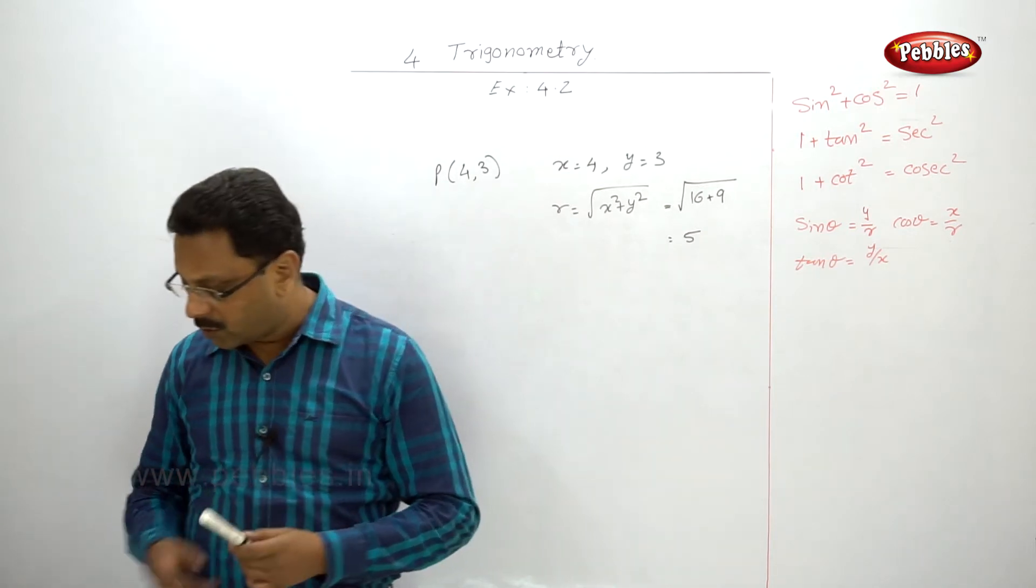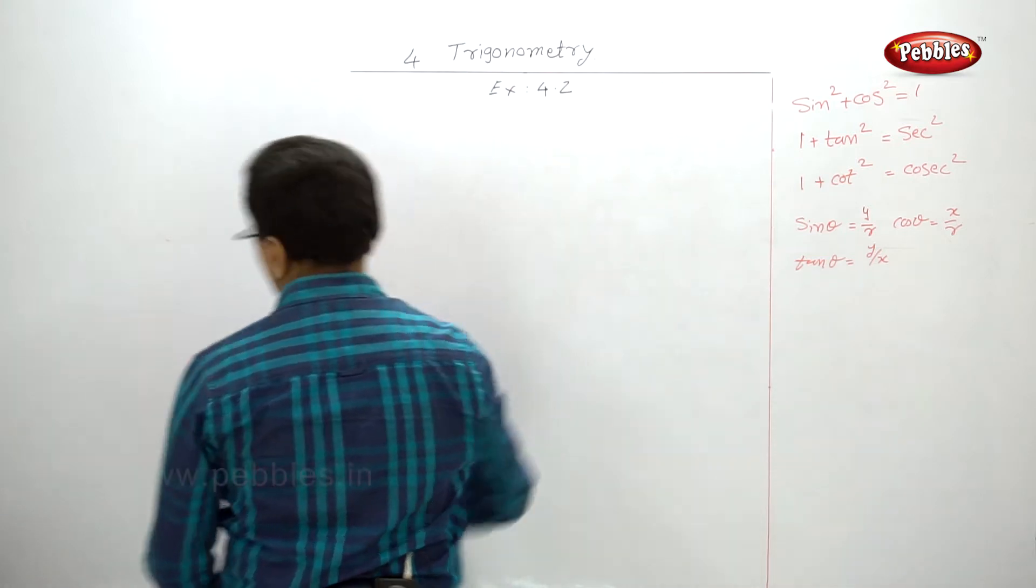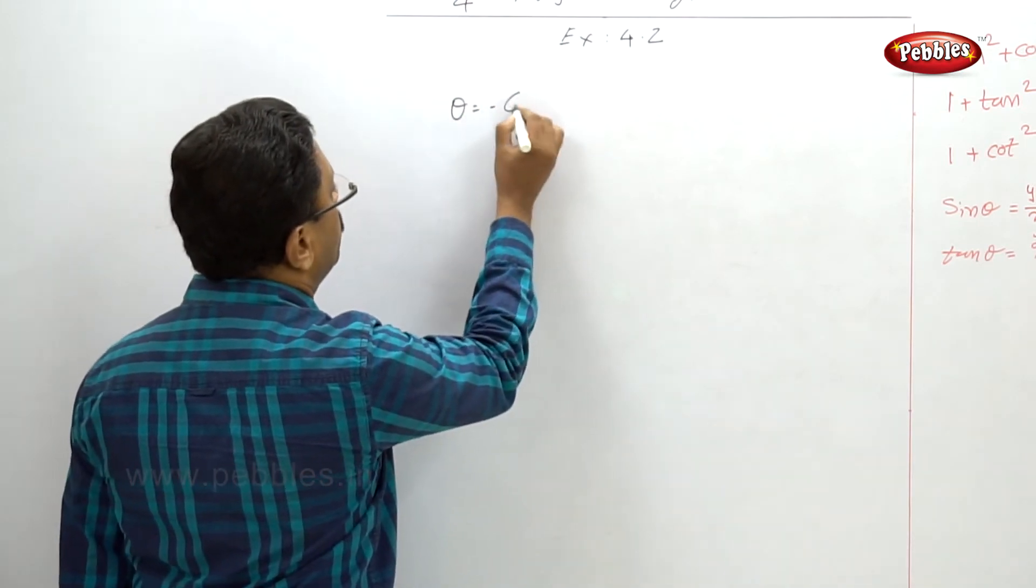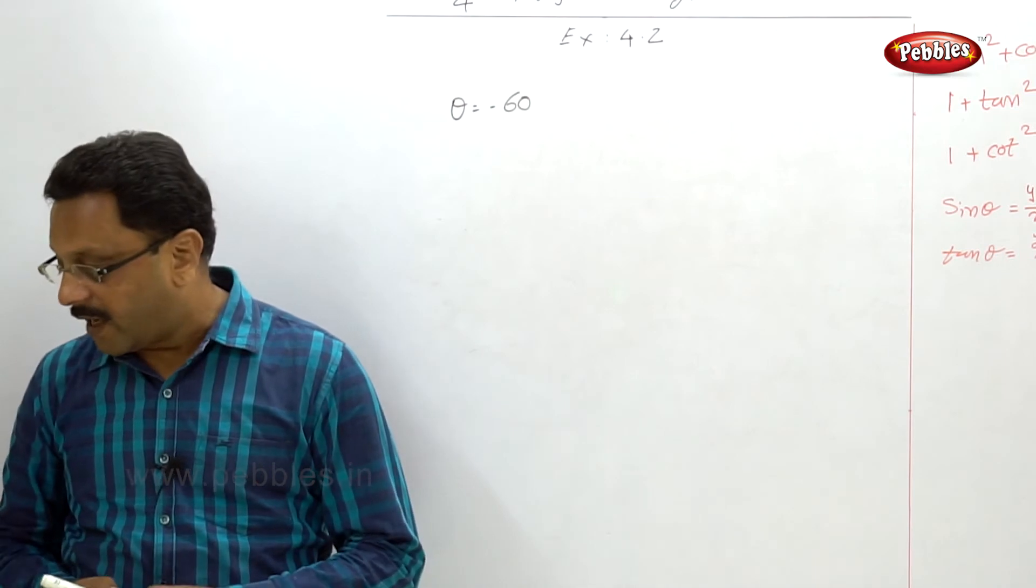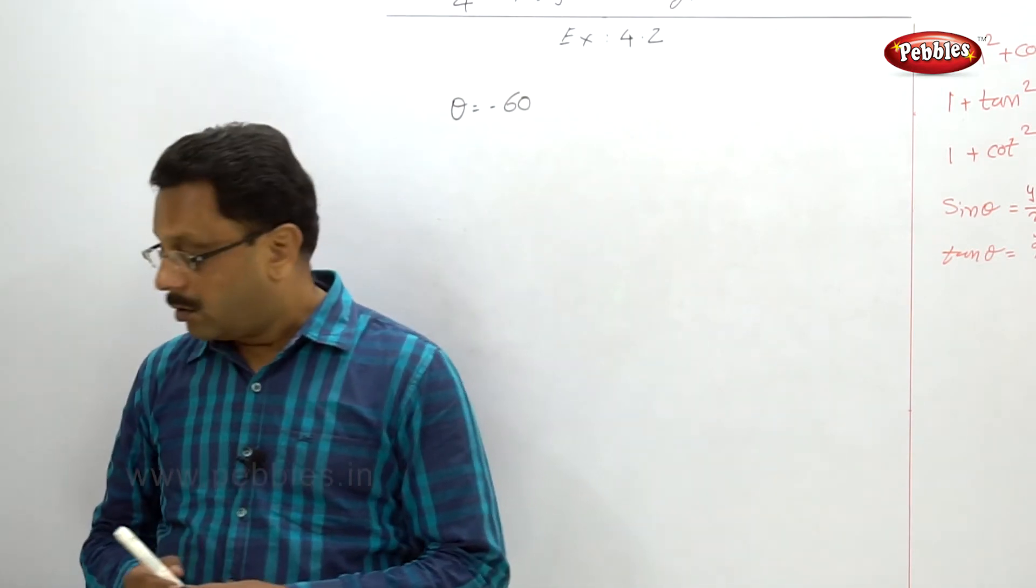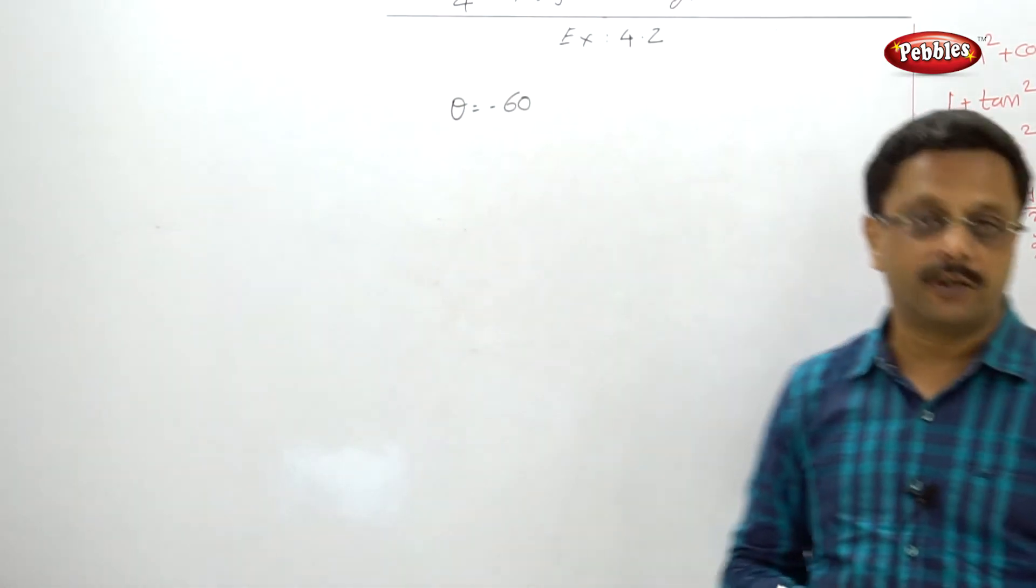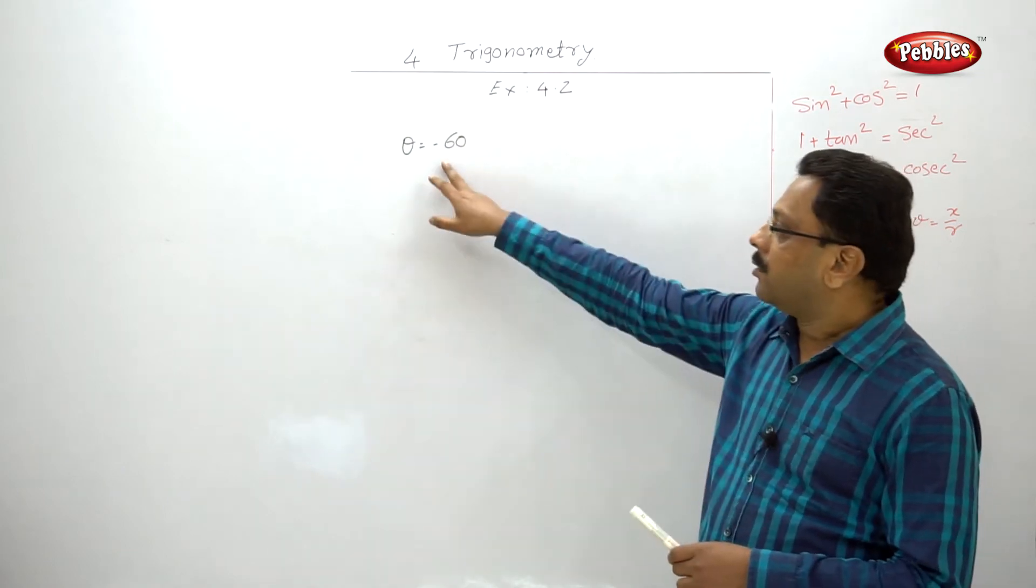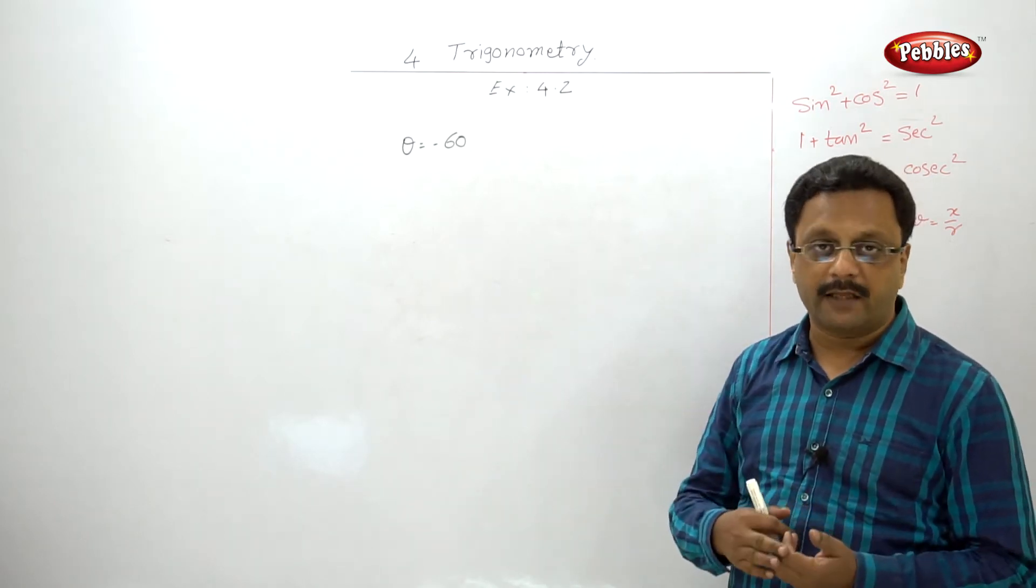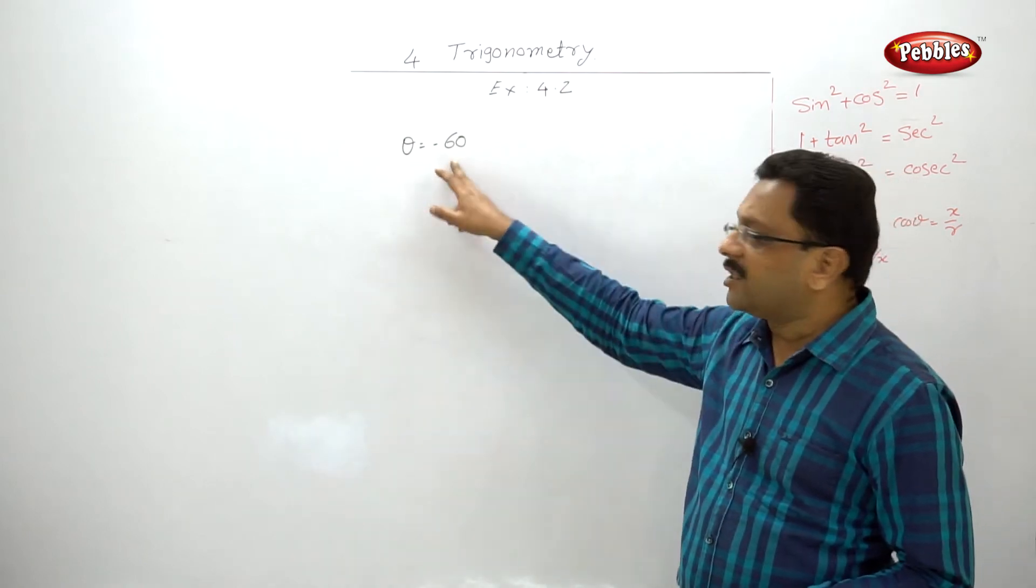Let us solve example number two. If the angle θ = -60°, find the values of sin, cos, tan, and sec. This appeared in March 12, March 14 exam for one mark and October 12 exam for one mark again. Popular question. Though they asked for only sin, cos, sec, and tan, I suggest you write all the values. This is very simple.